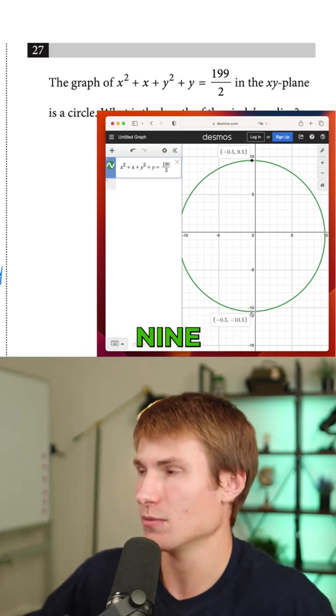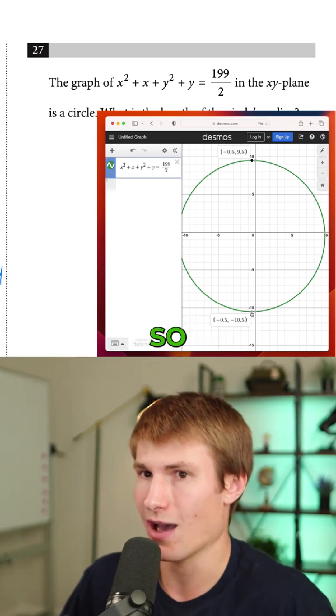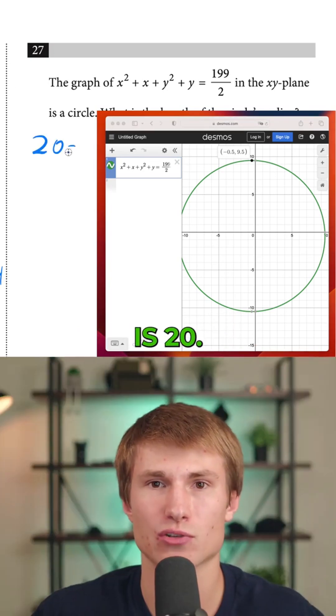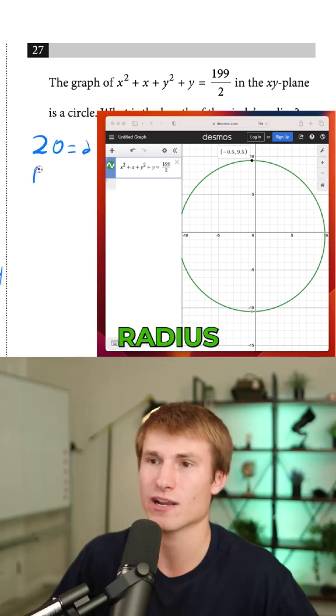The difference from 9.5 down to -10.5 means the diameter is 20. We know that our diameter is 20, so d = 20. We know that our radius then has...